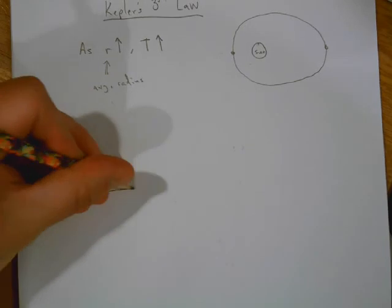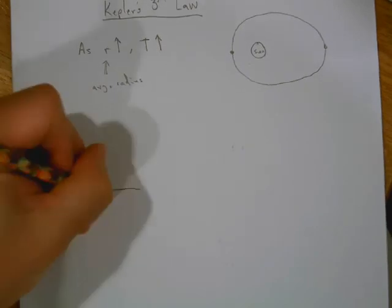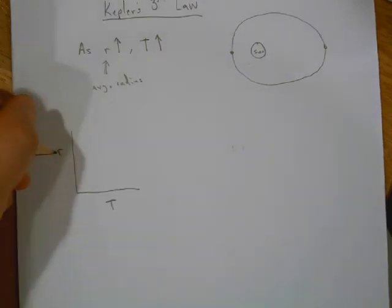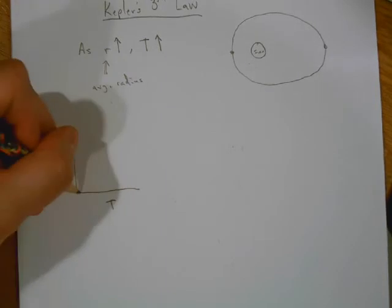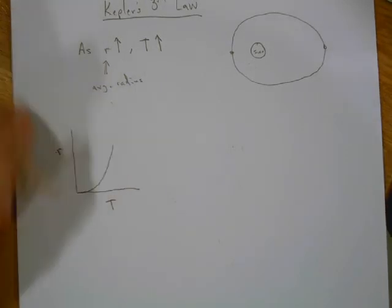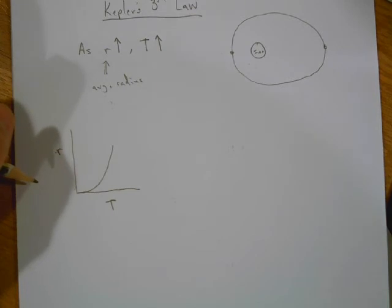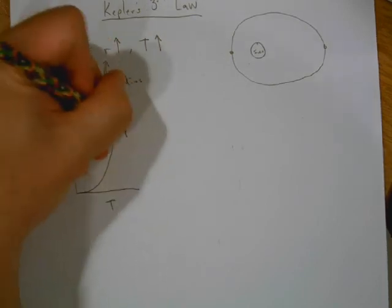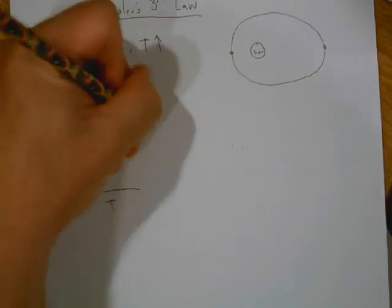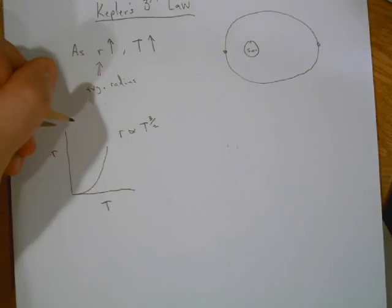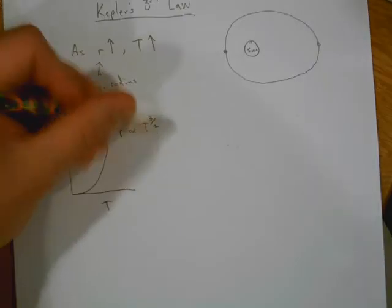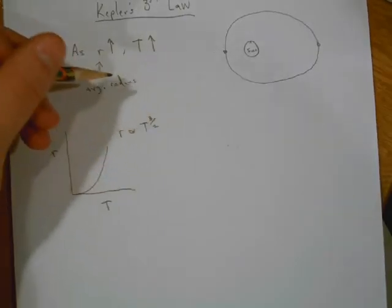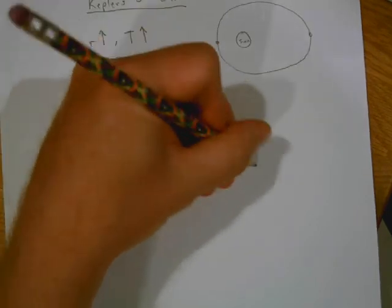Depending on how you set it up, if you set it up like this r and T, so this was average radius and this was the period, you should have got a relationship that looks like this. You might think that's a square relationship, but when you actually looked at the app you should have found that it was like r is proportional to T to the three halves.